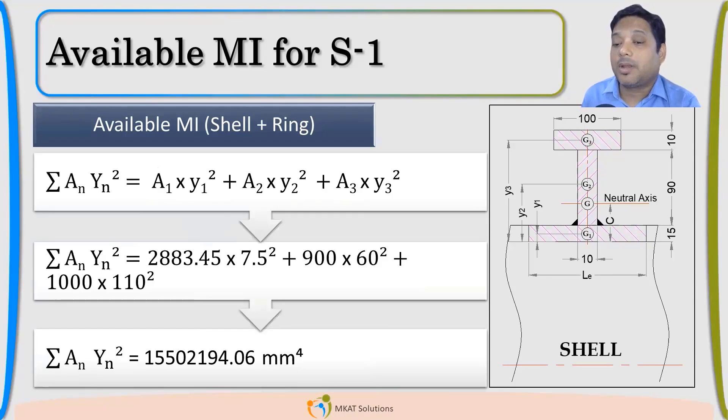Now, I have all these values. Only the summation of AN, Yn square is remaining. So, let us do that. A1 into Y1 square. All these values we have already calculated. Just calculations we have to do. That will give us the summation of complete A1, Y1, second moment of inertia.